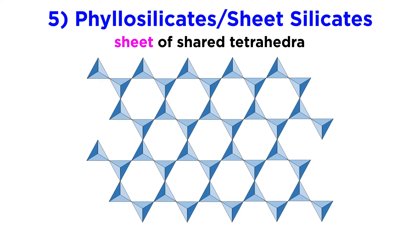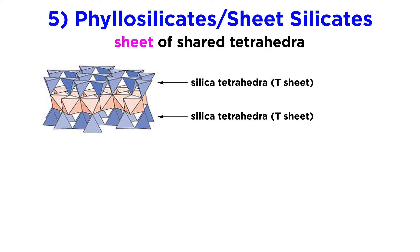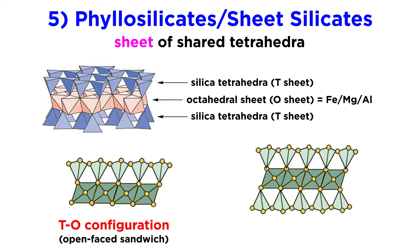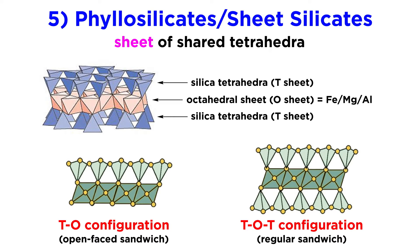Sheet silicates, or phyllosilicates, take double-chain silicates one step further. Each silica tetrahedron shares three oxygen atoms with the adjacent tetrahedron, forming an infinite sheet of shared tetrahedra. Sheet silicates have a silicon to oxygen ratio of 2 to 5. The sheet of silica tetrahedra, referred to as the tetrahedral or T-sheet, is stacked on top of an octahedral or O-sheet, which is a plane of divalent and trivalent cations like iron, magnesium, and aluminum. The T and O sheets stack together to form layers, which are bonded through strong molecular bonds. They can stack in a T-O (open-faced sandwich) configuration with one T-sheet bonded to one O-sheet, or a T-O-T configuration, where a single octahedral sheet is sandwiched by two tetrahedral sheets.